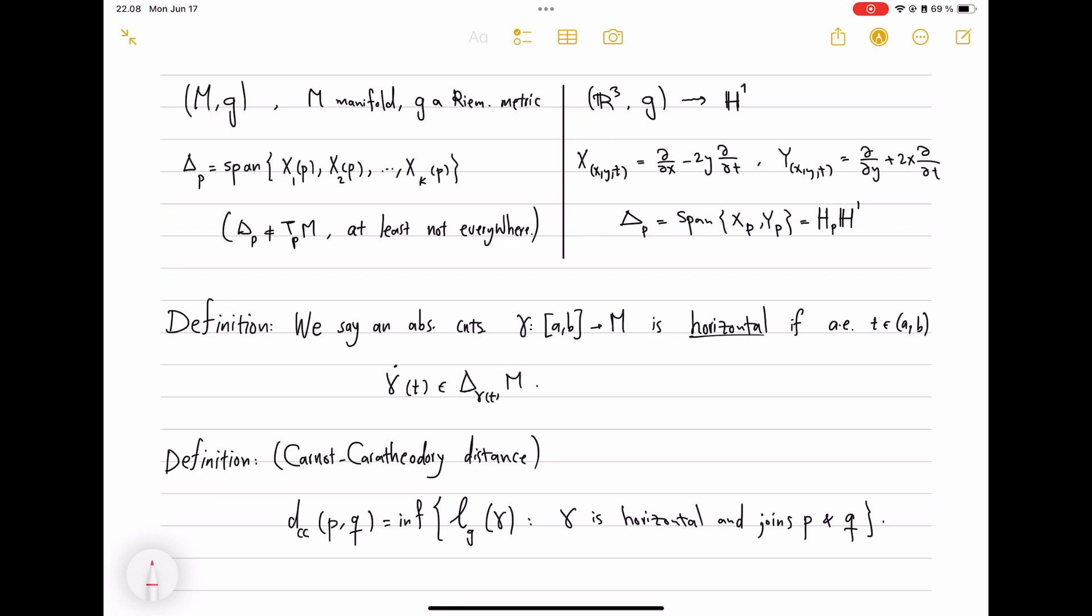Only with this structure, we can go ahead and define the Carnot-Carathéodory distance. We call an absolutely continuous curve into the manifold horizontal if almost everywhere the velocity lies in this designated subspace. So, again,